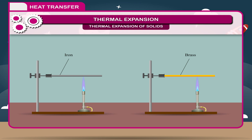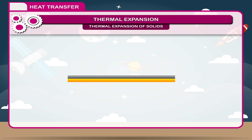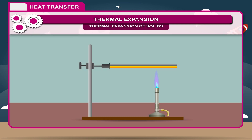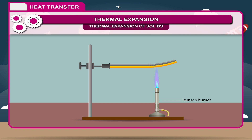Different substances of identical dimensions expand by different amounts when heated through the same range of temperature. Activity: Take a strip made of two metals — a bimetallic strip such as brass and iron. The strip looks flat at ordinary room temperature. Heat the strip over the flame of a Bunsen burner for some time. You will find that the strip bends due to heating such that brass is on the outer side and iron is on the inner side of the curved end. This shows that equal lengths of brass and iron, heated for the same time with the same range of temperature, have unequal expansion — brass expands more than iron. This forces the strip to bend towards the iron side.